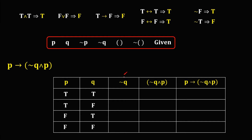To find the values for the NOT Q column, we take the negation of each Q value. The negation of true is false, the negation of false is true, the negation of true is false, and the negation of false is true. These are the values for this column.